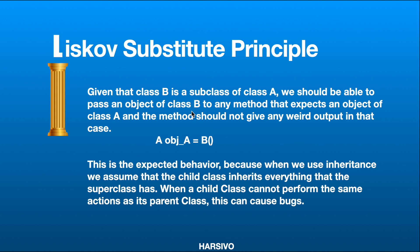We can utilize this kind of behavior in our application when using inheritance. However, in some cases, if a child class cannot perform the same actions as its parent class, that can cause issues. Object A will be calling all the functions available in class A, but if those functions are not available in class B, that can lead to unexpected bugs. This is why we have to comply with Liskov's Substitution Principle — if you are using inheritance in your codebase, you must make sure the subclass can replace its parent class and implements all the features available in the parent class.